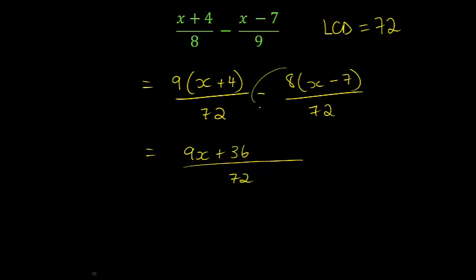So negative 8 times x is negative 8x. Negative 8 times negative 7 is positive 56. Collecting like terms, 9x minus 8x is just x. 36 plus 56 is 92 all over 72.